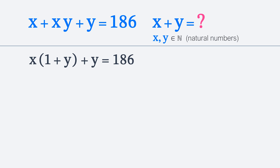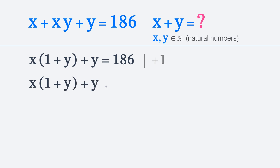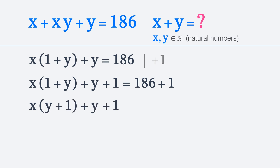Now we can notice that we have (1 plus y) and y. As we try to represent this equation as a product of factors, it would be good to have another one. So let's add 1 to both sides of the equation. Now we have x times (1 plus y) plus y plus 1 is equal to 187. Let's swap 1 and y in the parenthesis. Now we can factor out (y plus 1), and we get (y plus 1) times (x plus 1) is equal to 187.